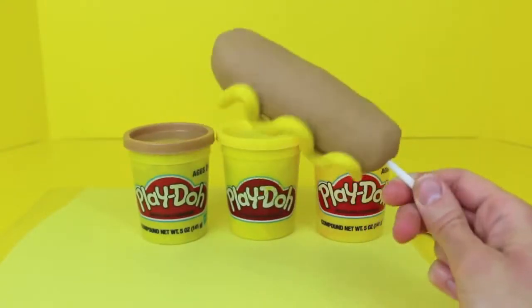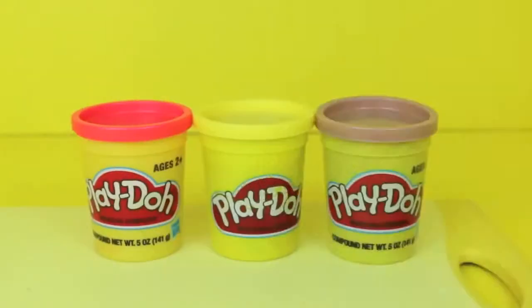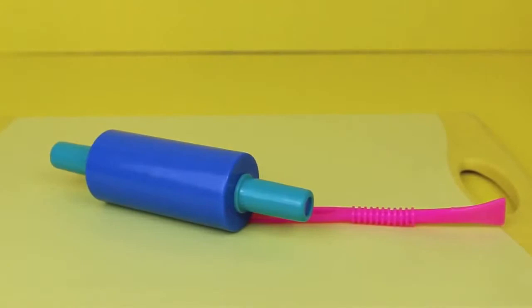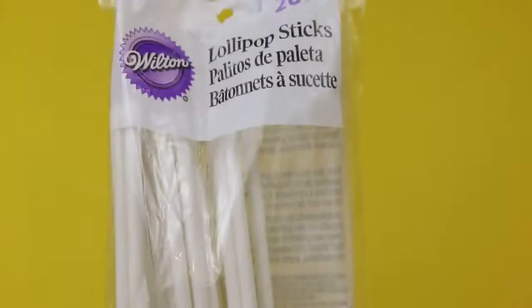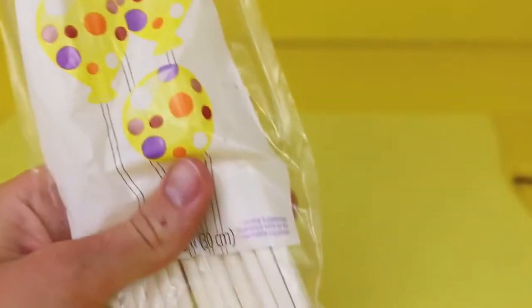Hello Disney Car Toys here and today I'm going to show you how to make a Play-Doh Corn Dog. To make the Play-Doh Corn Dog you'll need three cans of Play-Doh, a Play-Doh knife and a Play-Doh Roller, and you'll need some kind of corn dog stick. You could use either a popsicle stick or in my case I'm using these little lollipop cake sticks.